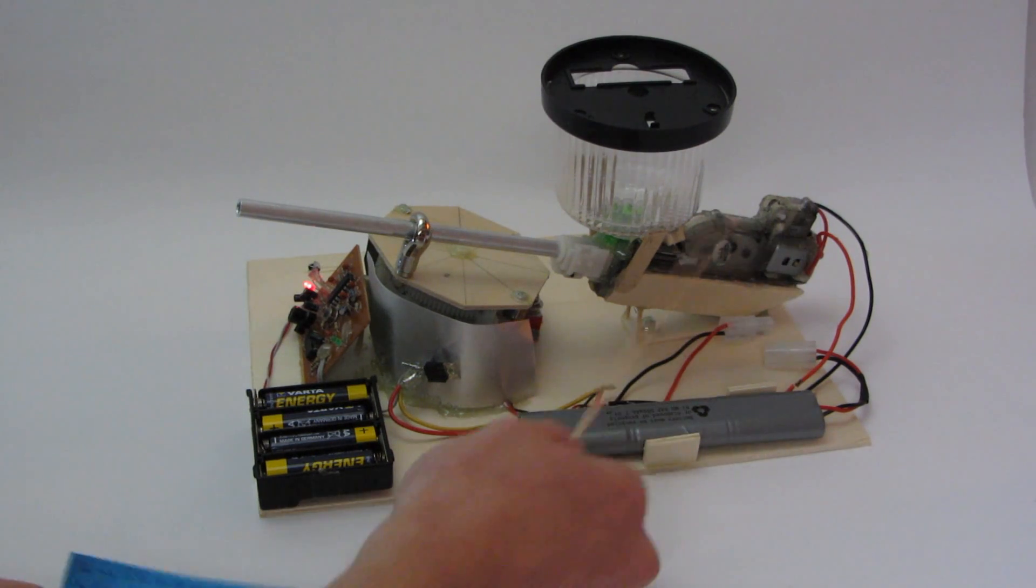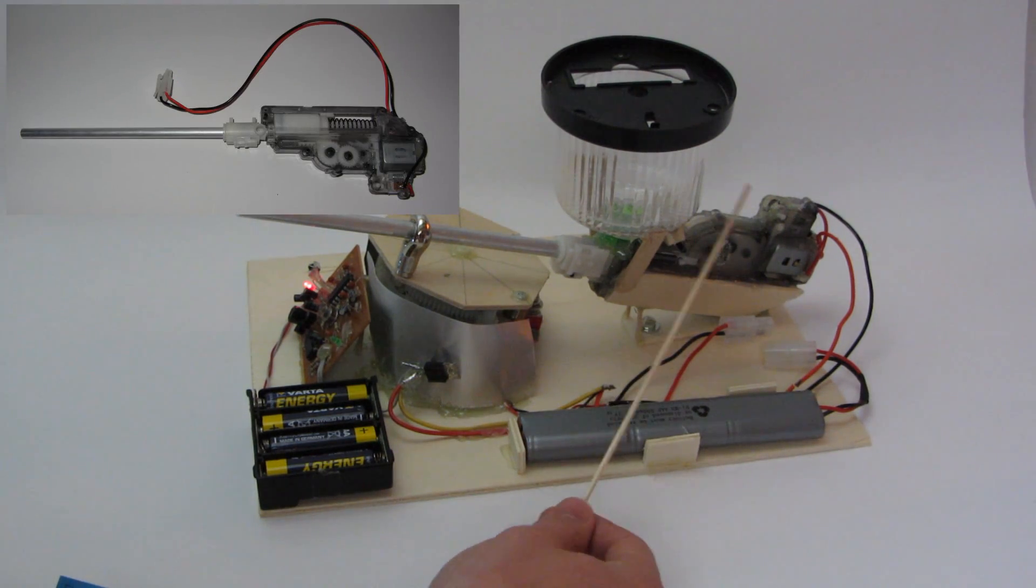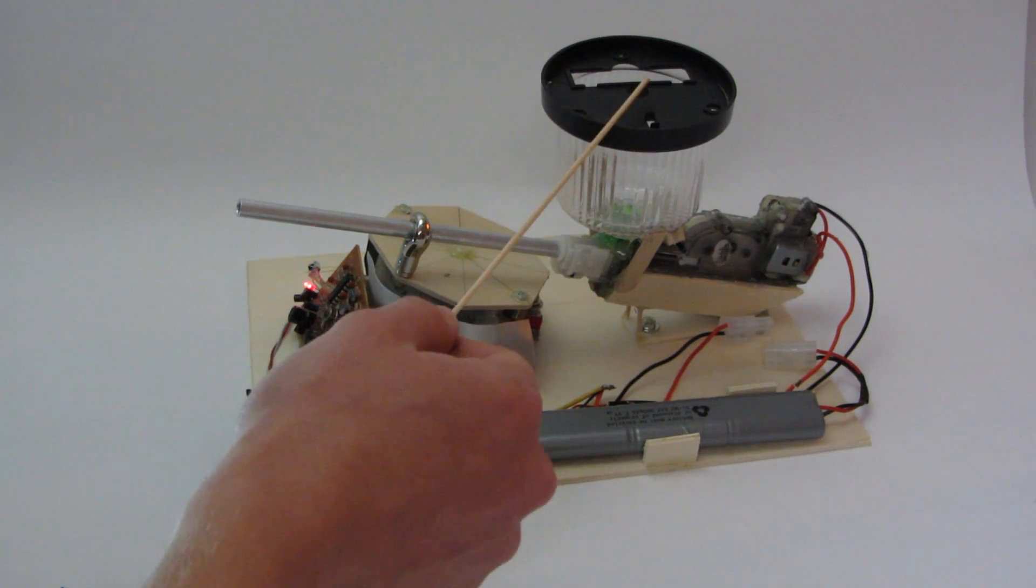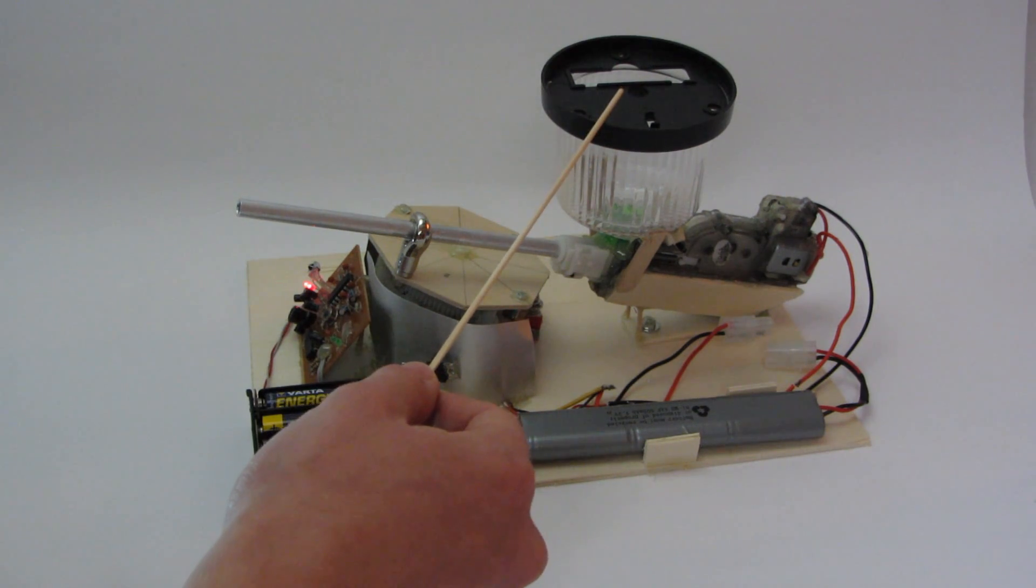You have a G36 gearbox here. The 6mm BBs have about 0.5 Joule kinetic energy. It's all driven by a 7.2 volts battery pack. This container up here can hold up to 600 BBs.